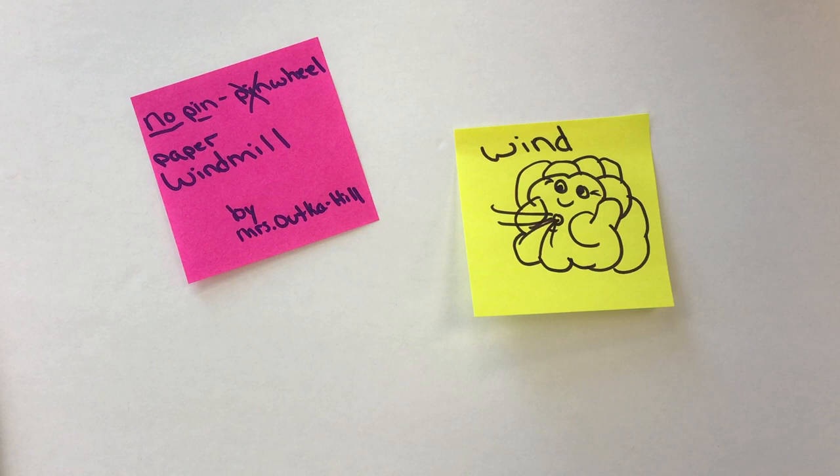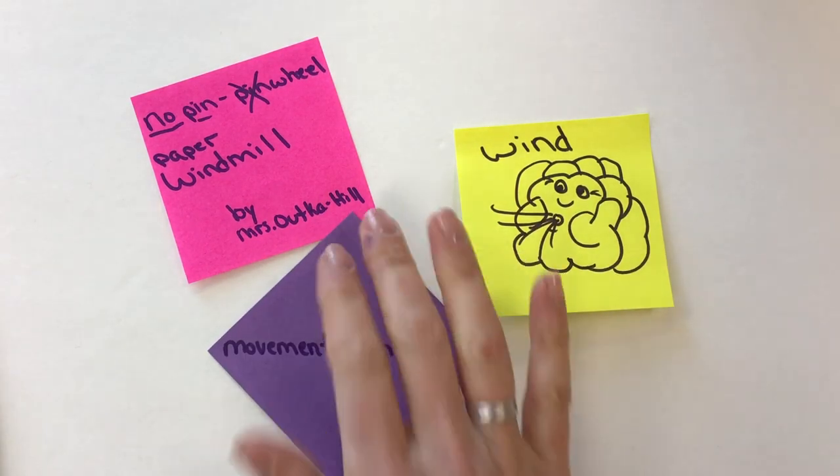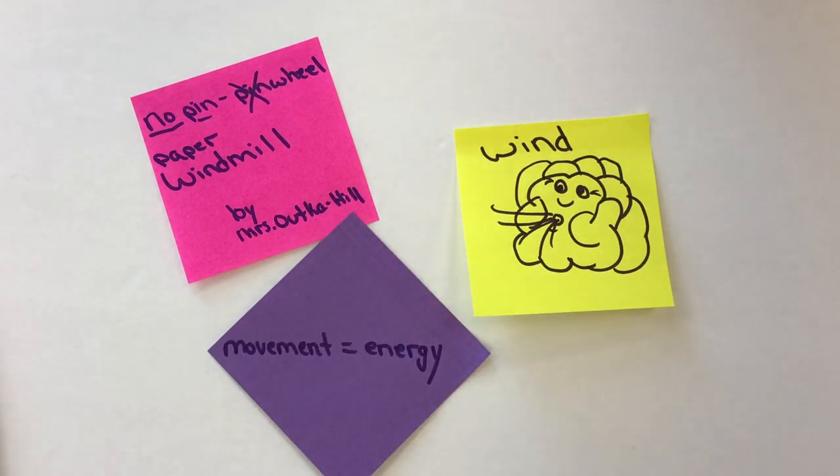Wind can create movement. When we have something that moves, that movement can create energy and that energy can then be turned into something else. If you think of a windmill up on the hill where the wind is making it turn around and around, that movement is going down into a gear that does something else. Maybe it's pumping water out of the ground, or maybe it's having something move.